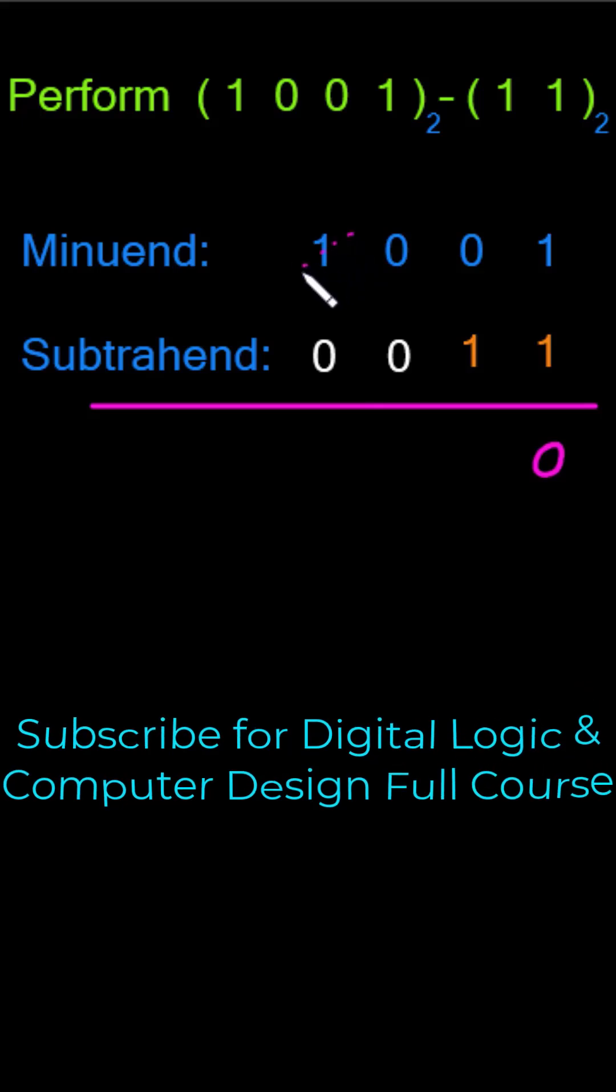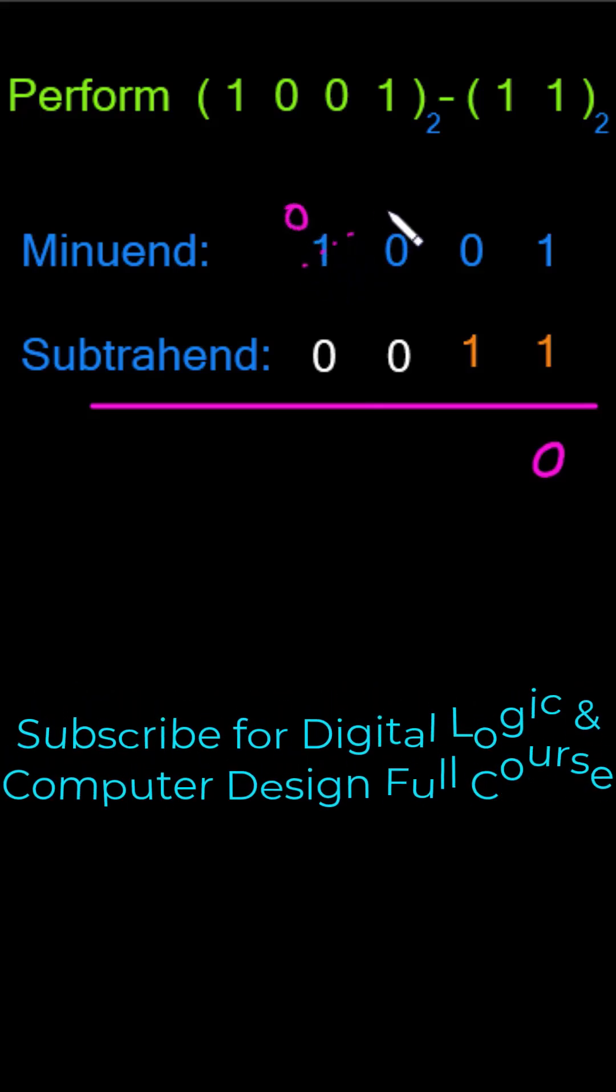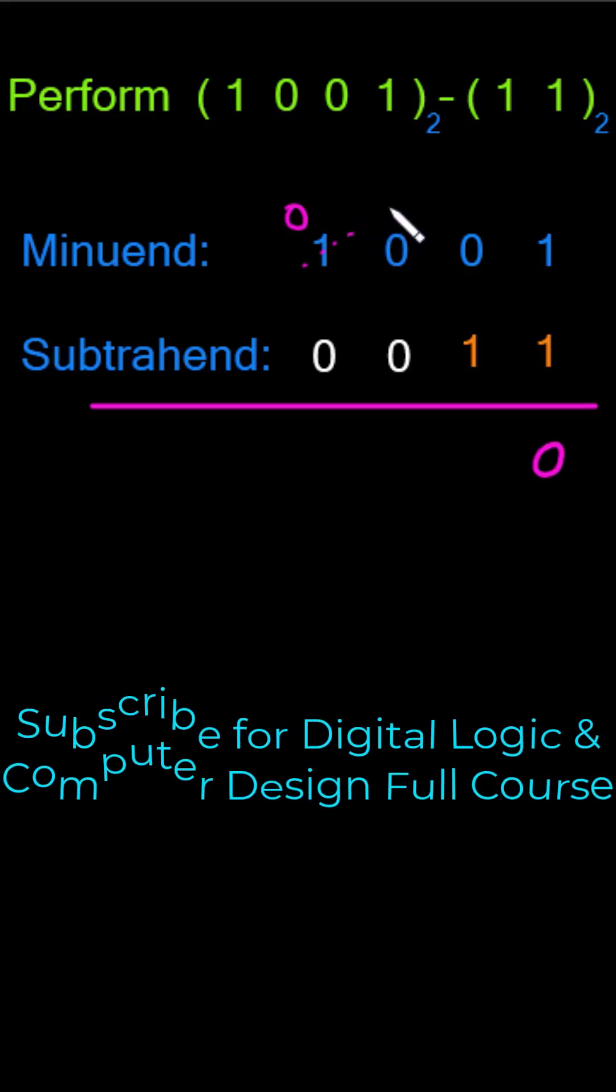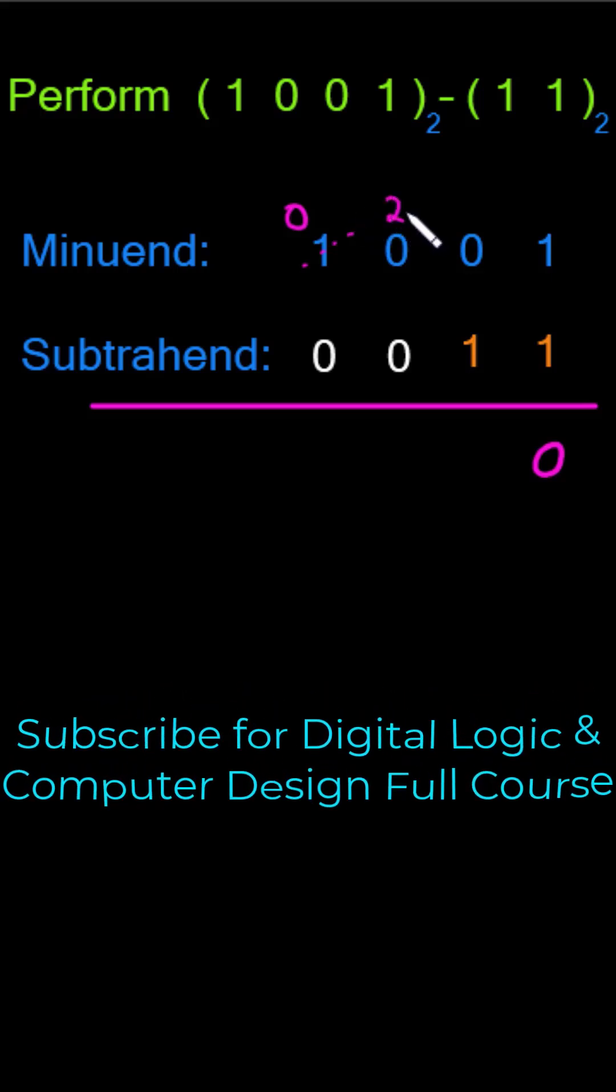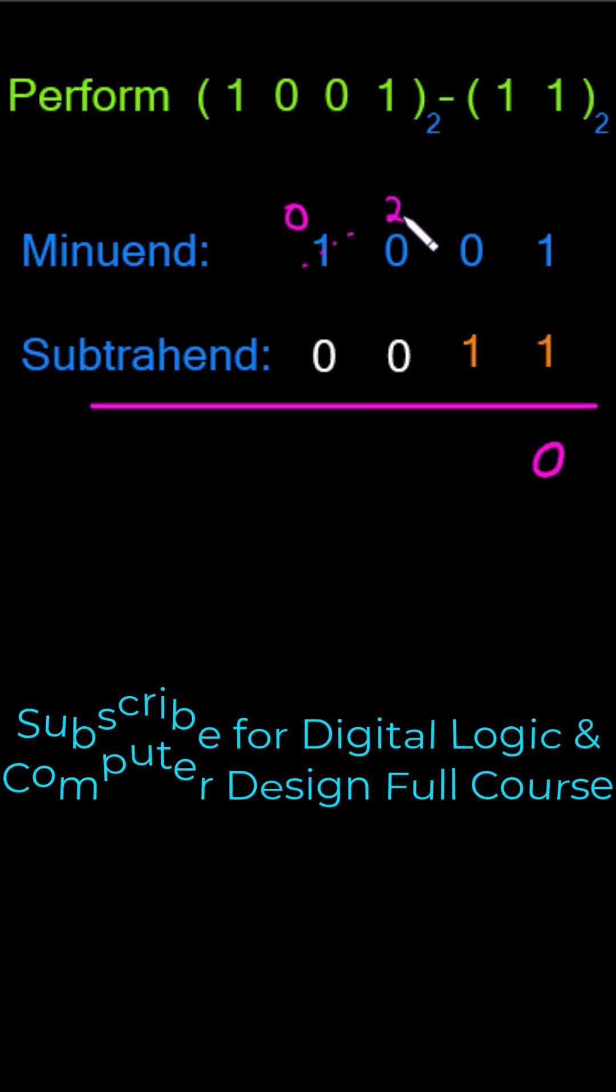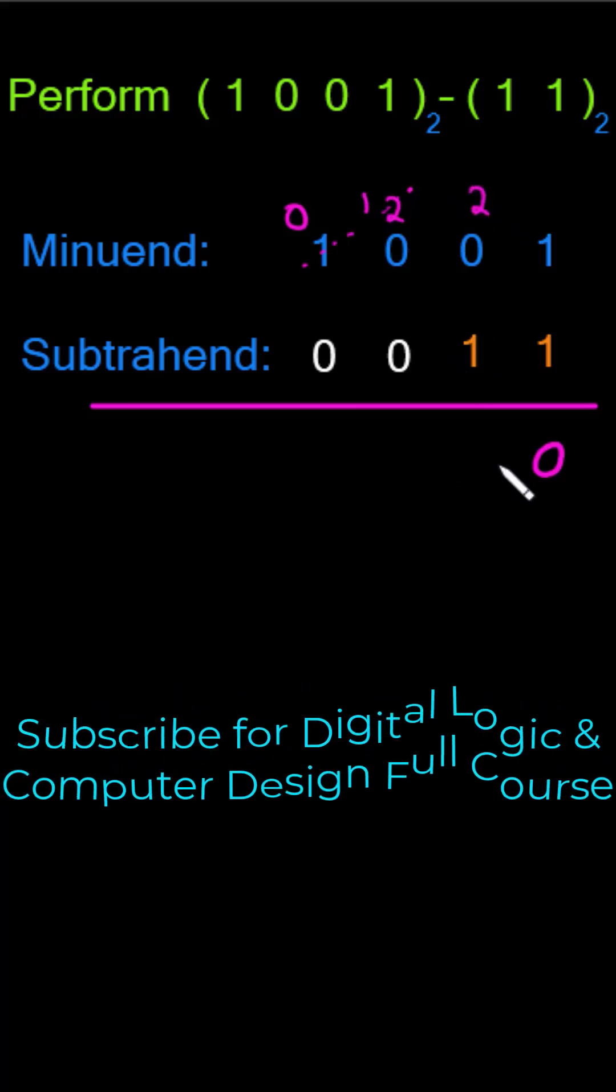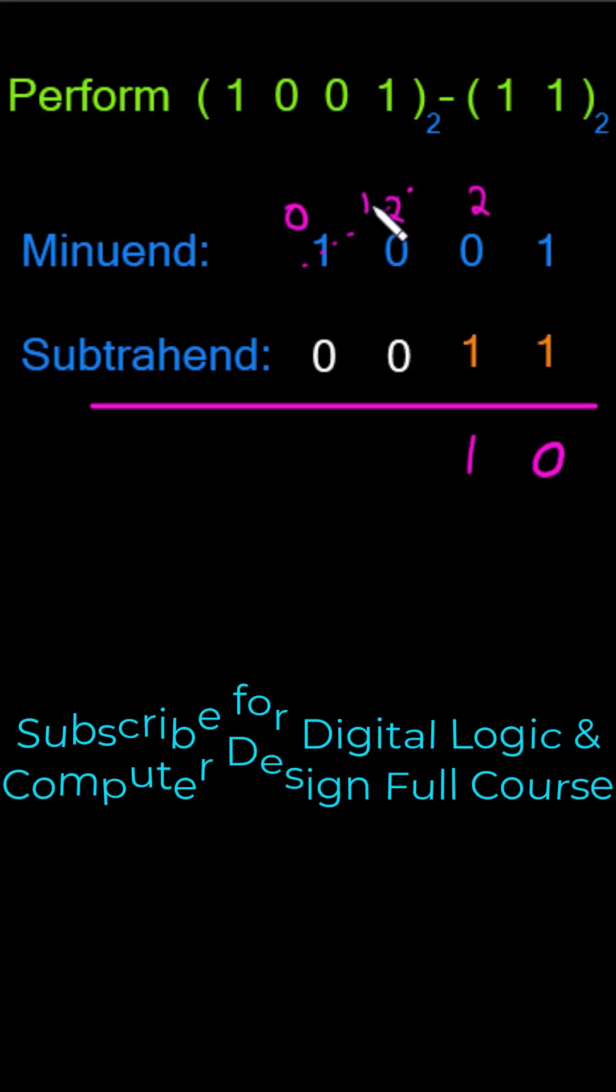I will borrow one and when I do so it will become 0, and here it will be 2 because borrowing one from the next column equals 2 in this column. Then from this 2 I have to take a borrow. When I borrow one from here, this will become 1 and here it will be equal to 2. So now 2 minus 1 will give us 1, and 1 minus 0 will give us 1, and 0 minus 0 will give us 0.